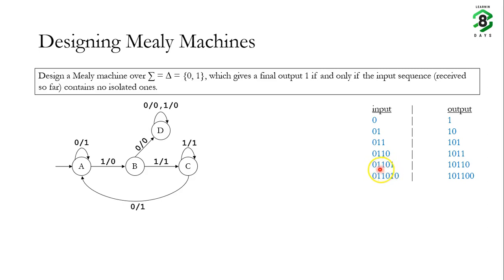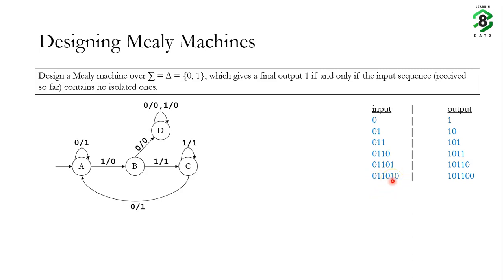If we receive a 0 in state C, we go back to state A and continue to produce output 1. For example, if we received input 0 1 1 and then another 0, the sequence 0 1 1 0 does not contain isolated ones, so we produce output 1 and return to state A. But after returning to state A, if we see a single 1 next, the input sequence now contains an isolated one. So we take the machine to state B and produce output 0. After that, receiving another 0 confirms the isolated 1, and the machine always produces output 0 from state D onward.